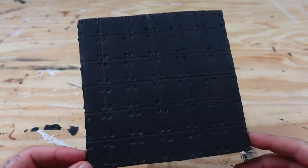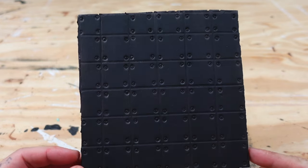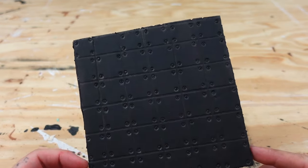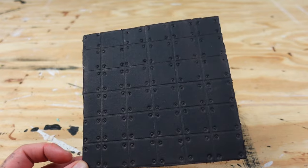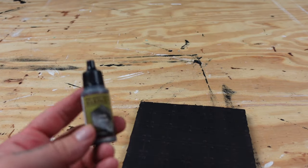So once that primer's nice and dry, our getting close to the end here step is a quick dry brush with whatever silver you happen to prefer.